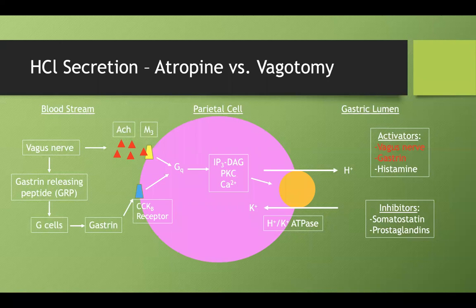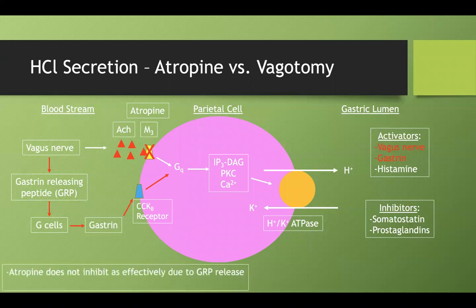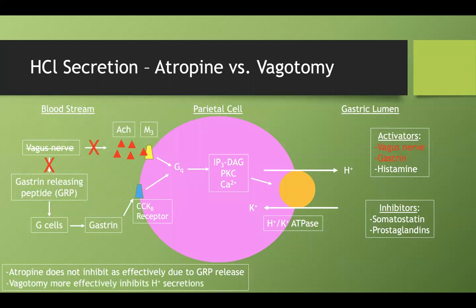Comparing atropine versus vagotomy: if you give somebody atropine, it shuts down the M3 pathway, but you can still get hydrogen ion secretion through the GRP/gastrin pathway. On the other hand, if you cut the vagus nerve in a vagotomy, you won't get either pathway activated. So a vagotomy more effectively inhibits hydrogen ion secretion.